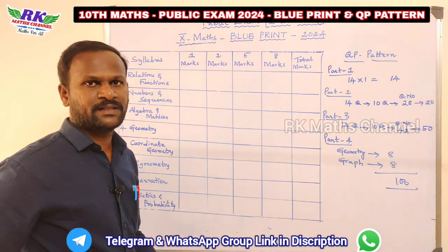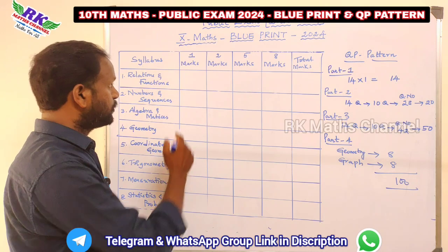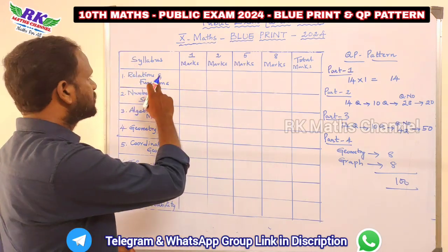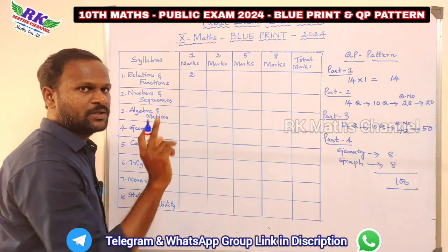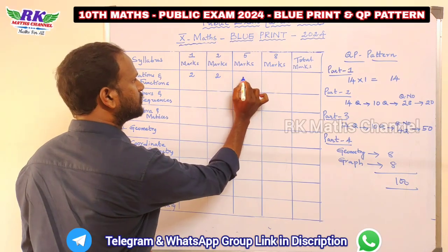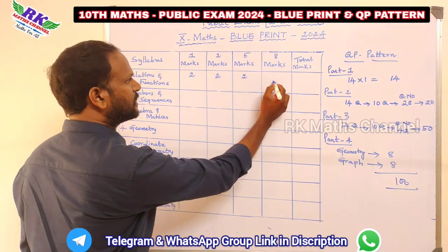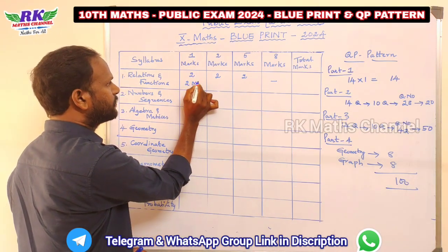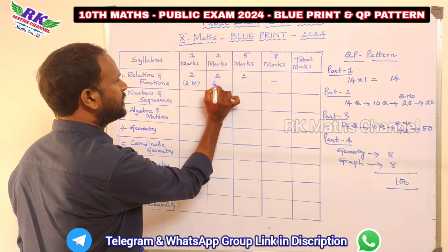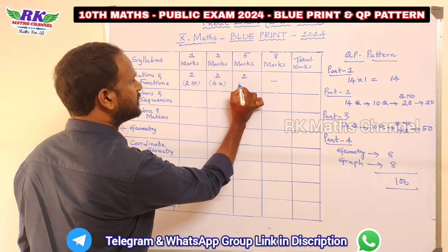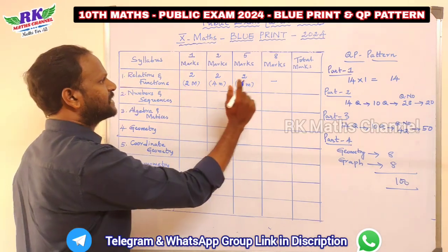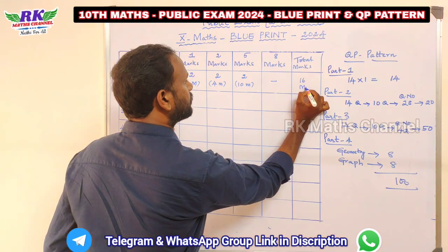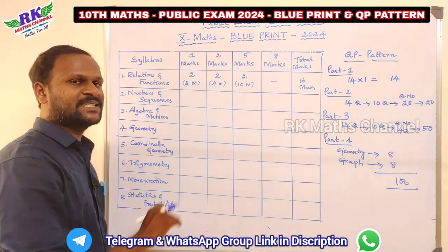Looking at the blueprint, the marks breakdown is: 1 mark, 2 marks, 5 marks, and 8 marks. For the first lesson: 1-mark, 2-mark, 2-mark, 4-mark, and 5-mark questions — two marks twice, five marks. Total for the first lesson is 16 marks.